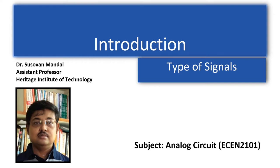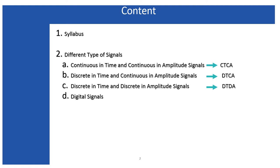Welcome to this course. I will start with the syllabus followed by a brief overview of different types of signals, starting from analog to digital signals. This lecture will help you understand the process behind the conversion from analog to digital data and why we should study analog circuits and signals where everything is being digitized. The signal types are: CTCA, DTCA, DTDA, and the digital signal.